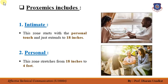Proxemics includes the intimate zone. This zone starts with a personal touch and extends to 18 inches. Members of the family, spouses, relatives, and parents fall under this zone. This zone doesn't need active conversation — only a whisper is enough. A handshake, a pat on the back, or a hug all come under this zone.